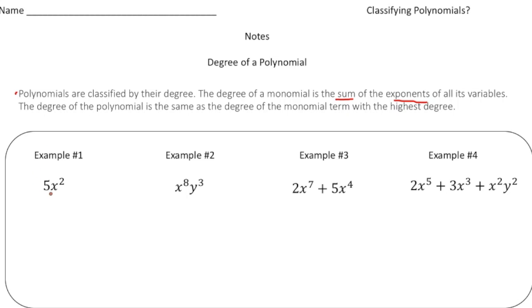So over here we have 5x squared, right? So the only exponent we have is the x squared. So that would just be the second degree. The degree of that monomial would be the second degree.